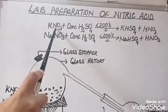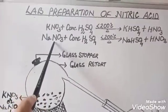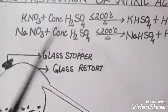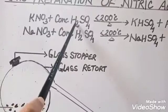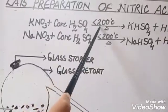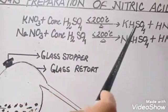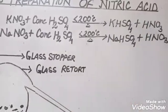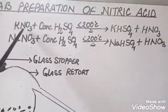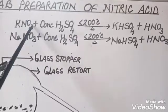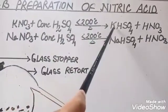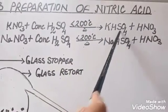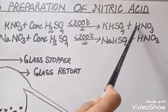we use potassium nitrate or sodium nitrate and concentrated sulfuric acid. This mixture is heated below 200 degrees Celsius to get a bisulfate and nitric acid. Potassium nitrate is heated with concentrated sulfuric acid to get potassium bisulfate and nitric acid.